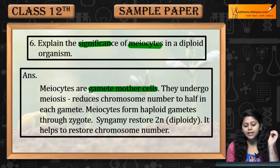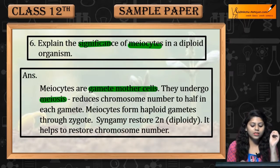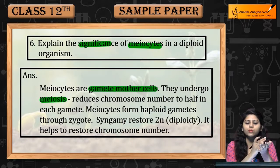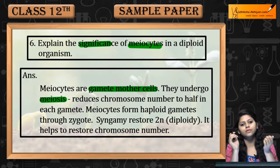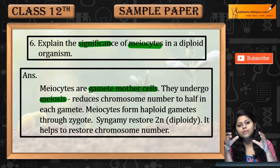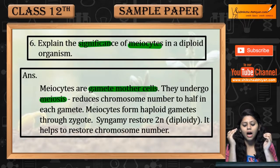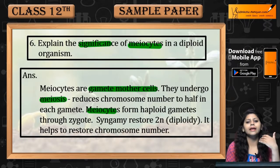First of all, meiocytes are gamete mother cells. उनमें meiosis होती है, जो chromosome number है. Meiosis से reductional division होता है, chromosome number reduces to half. So, meiocytes में meiosis होती है and chromosome number half हो जाता है.